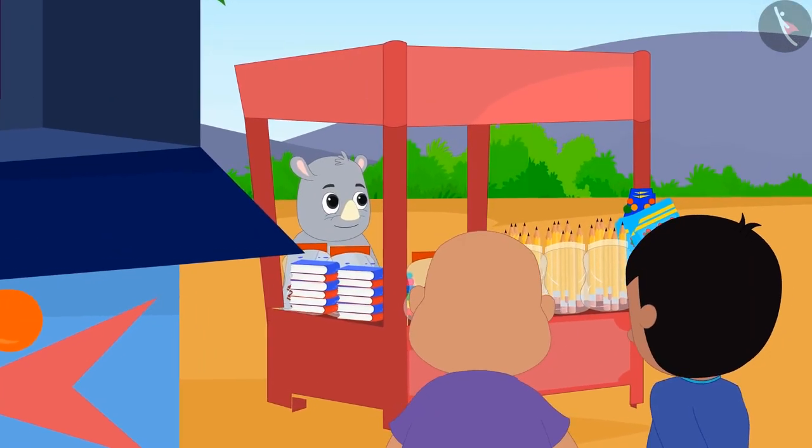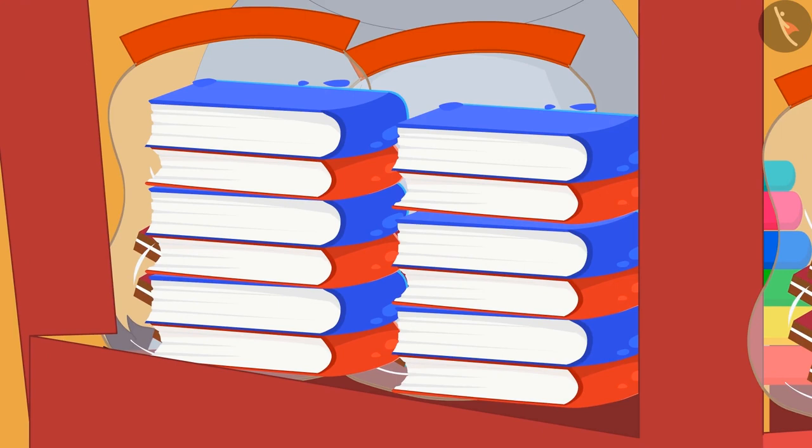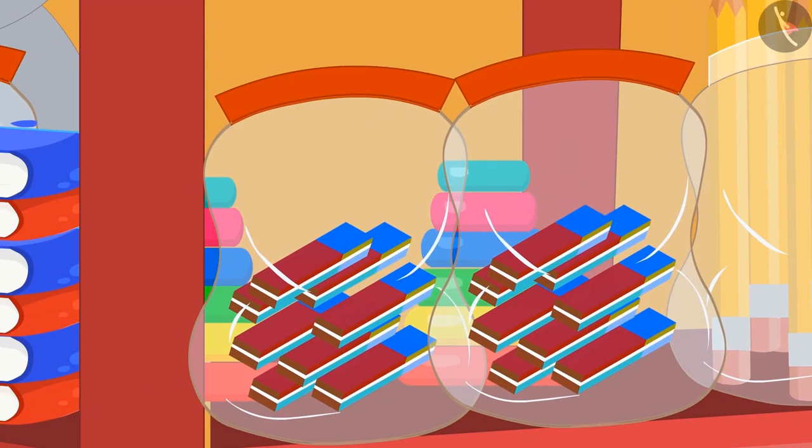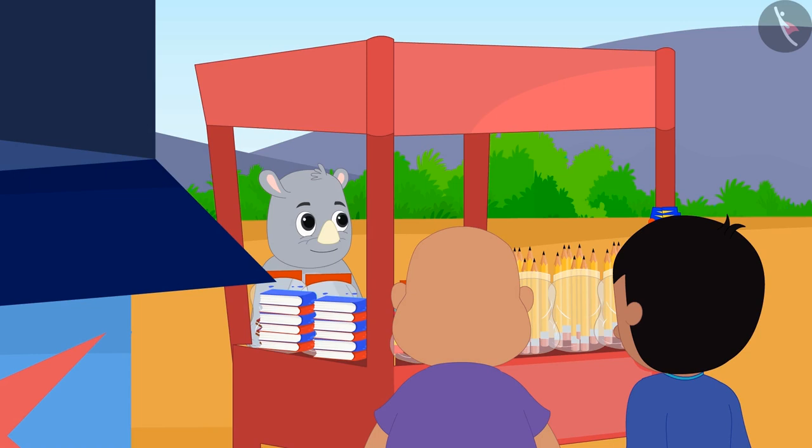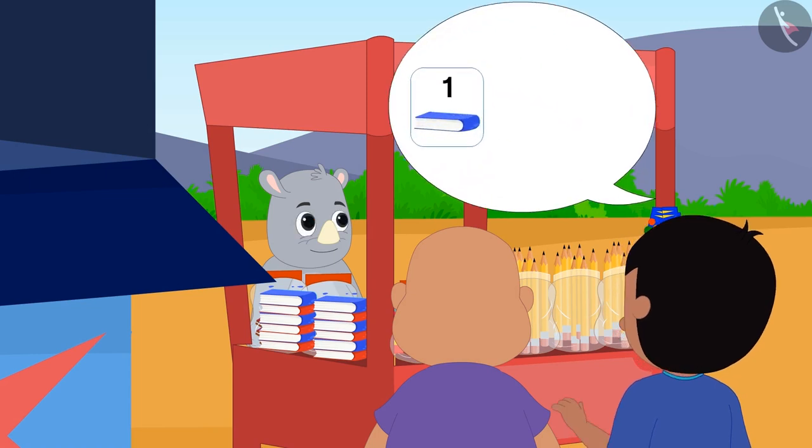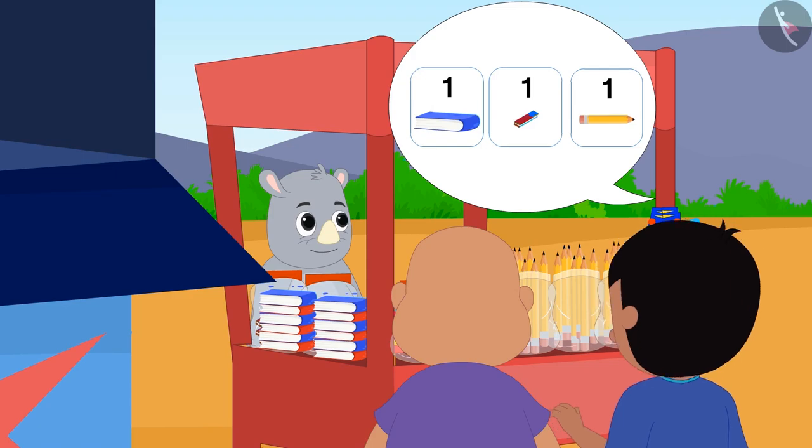Raju and Bablu have come to Gaggu's shop to buy notebooks, pencils and some other items. Raju asked Gaggu for one notebook, one rubber and one pencil.